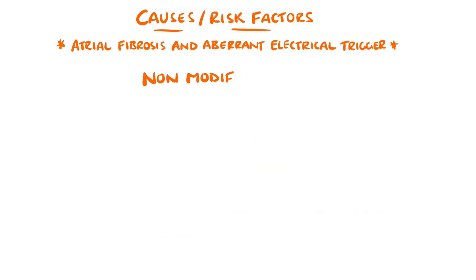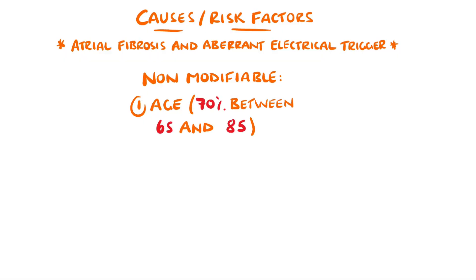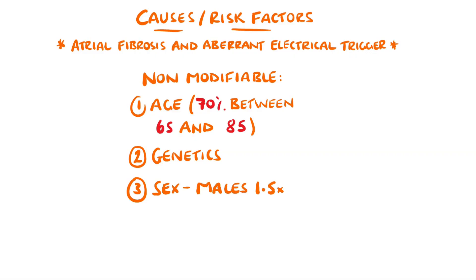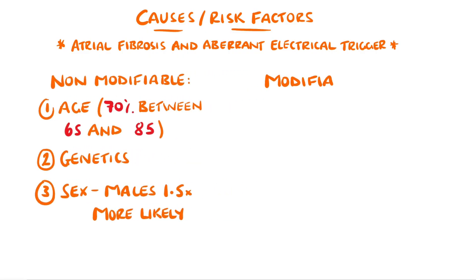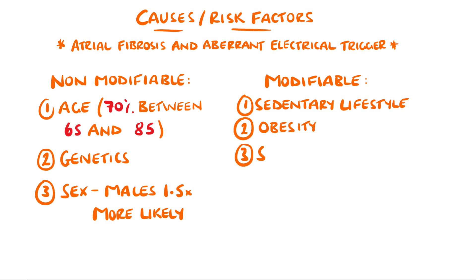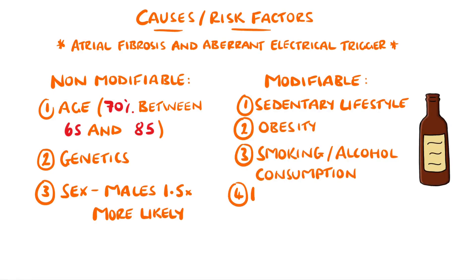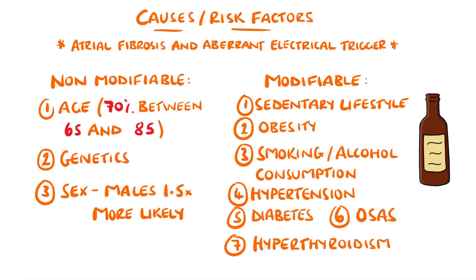Non-modifiable risk factors for atrial fibrillation include age, as around 70% of all people with atrial fibrillation are between the ages of 65 and 85. Genetics is another factor, as well as sex, with males thought to be more commonly affected. Modifiable risk factors are a sedentary lifestyle, obesity, smoking and alcohol consumption, hypertension, diabetes, obstructive sleep apnea, and hyperthyroidism.